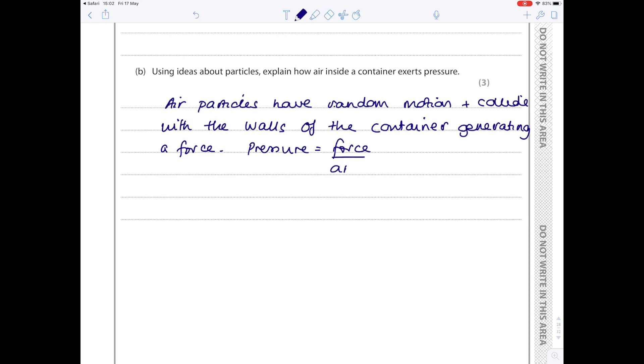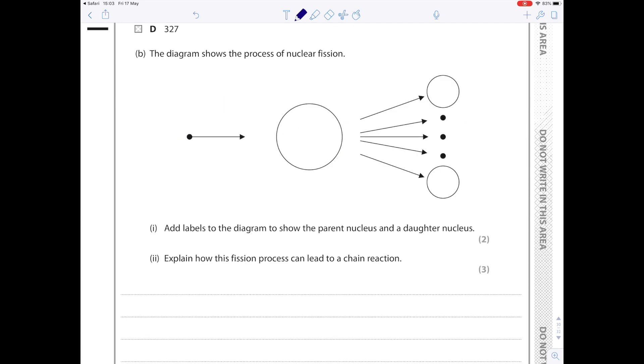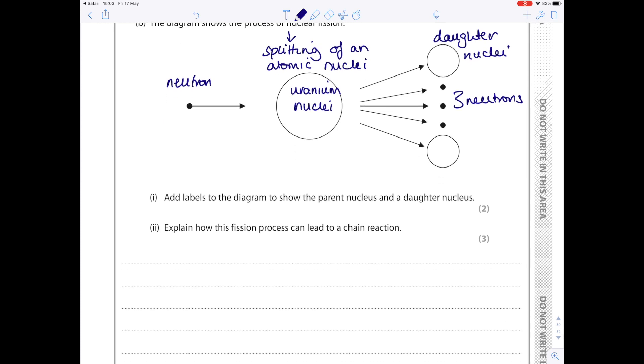Let's touch now on nuclear fission because we have a nice diagram of it here. Remember that's when a neutron is absorbed by, tends to be uranium, and you have to say the word nuclei here to get the mark, producing daughter nuclei, which are these smaller ones here, and three neutrons. So please be aware of the process. So the perfect definition of nuclear fission is it's the splitting of an atomic nuclei.